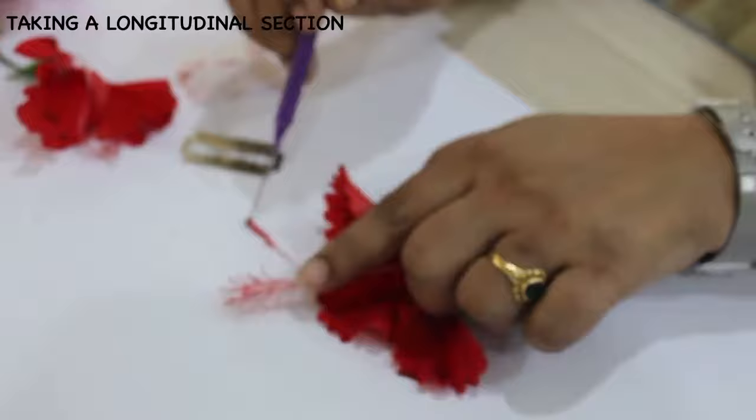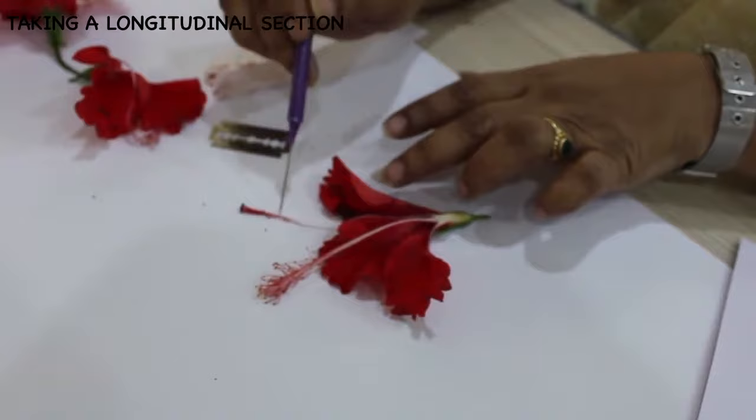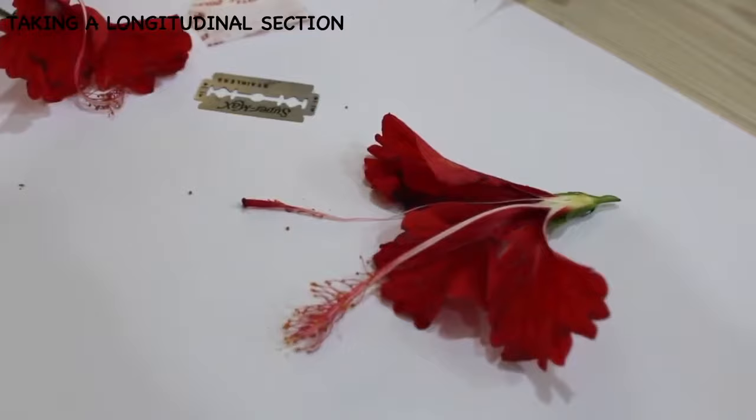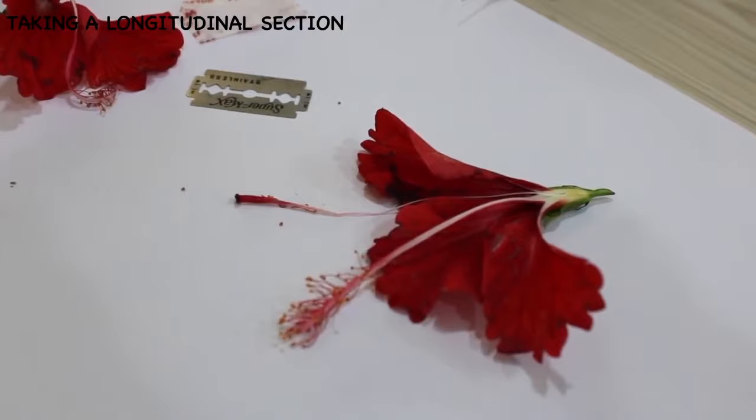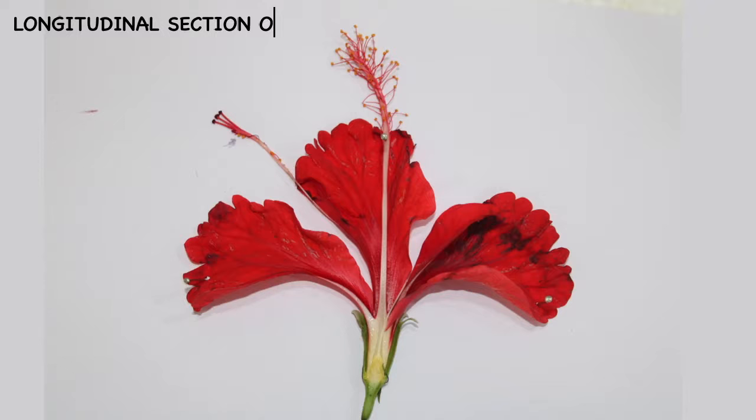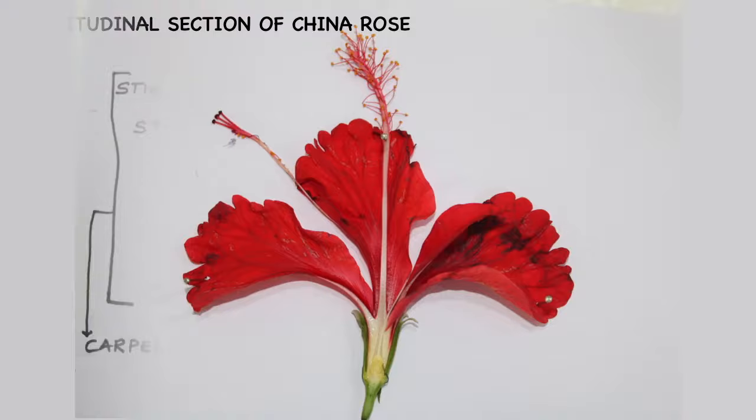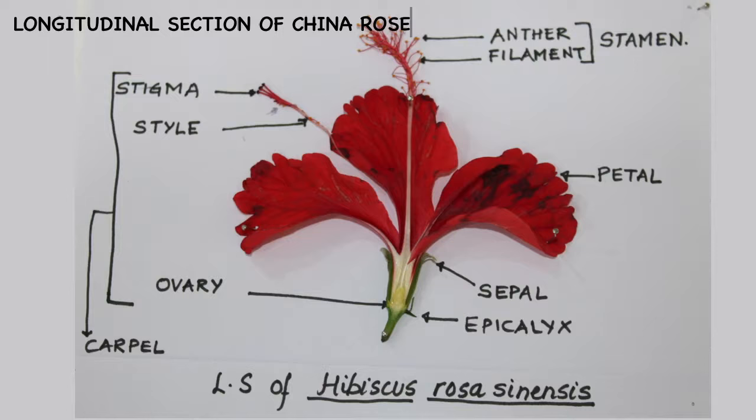This is how the separation is done. Now you can see the separated parts: the gynoecium, the androecium, and the longitudinal section of the flower. This is how you pin it up. When you pin, make sure that the androecium and the gynoecium are placed at different angles so that it is easier to label them. This is the labeling of the entire flower. This is the longitudinal section of Hibiscus rosa-sinensis.